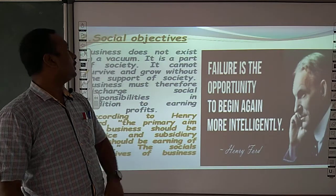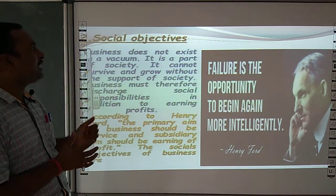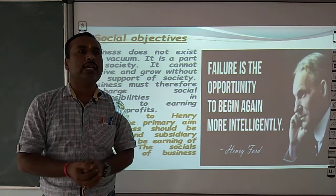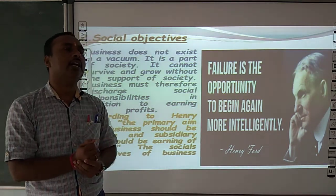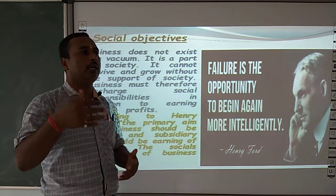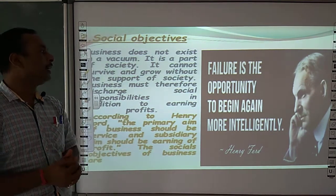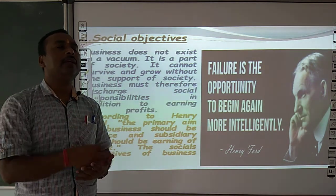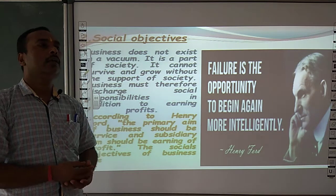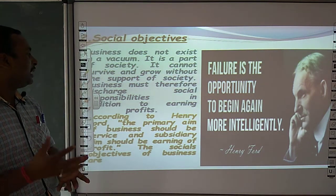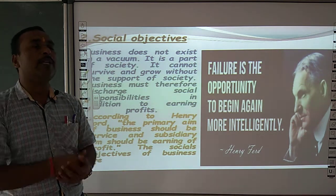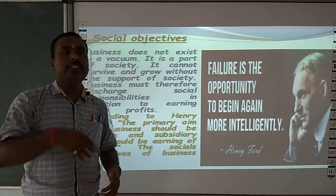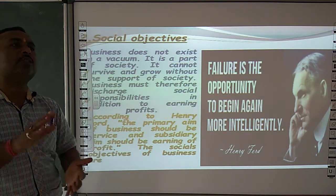Next, social objective ki baat. Business does not exist in a vacuum, it is a part of society. Chunki joh business hota hai woh a part of society hota hai — kisi bhi business organization me society ke parts jaise joh employees hain, woh society ke hi parts hain. Toh humara social objective hai, hum us society se hi lete hain, earn karte hain, toh society ka bhi growth hona chahiye. Agar koi business profit earn karta hai, toh uska ek social responsibility hota hai, as has been told in the first chapter — every business organization has a social responsibility.